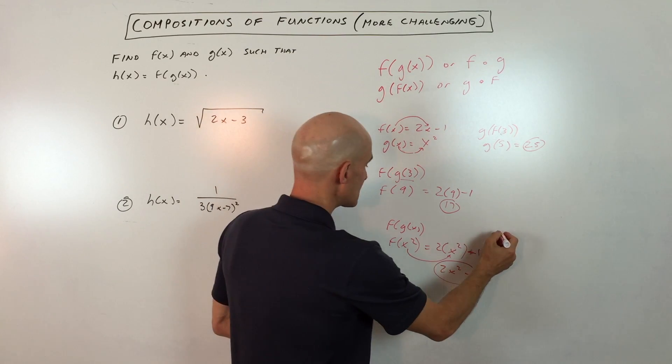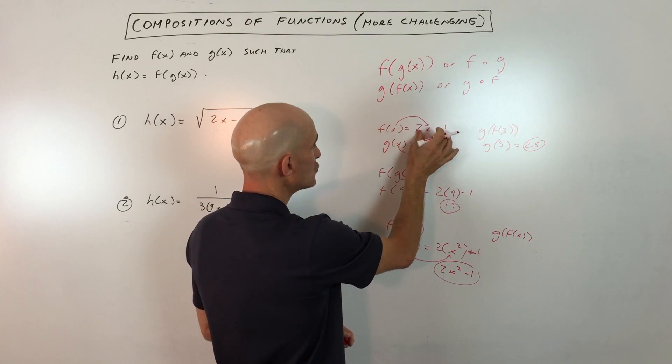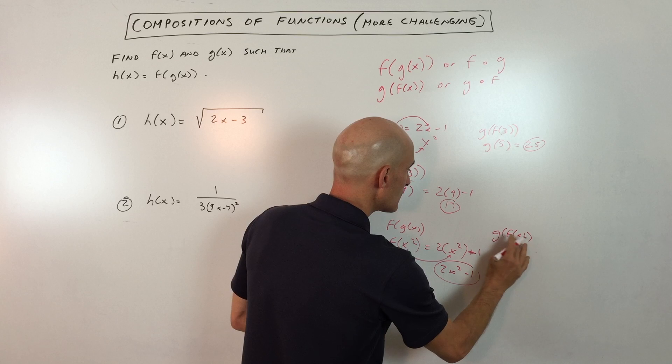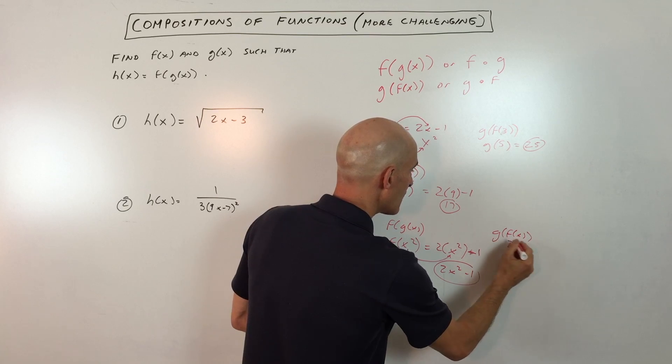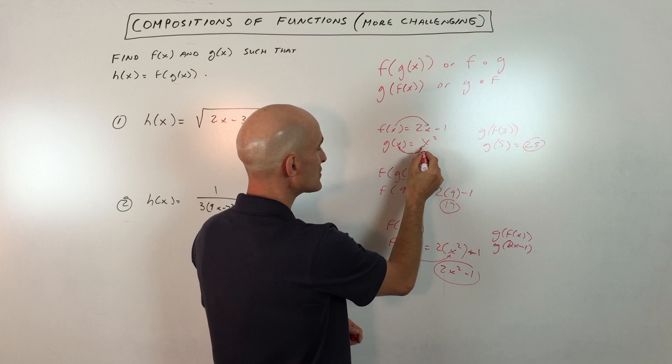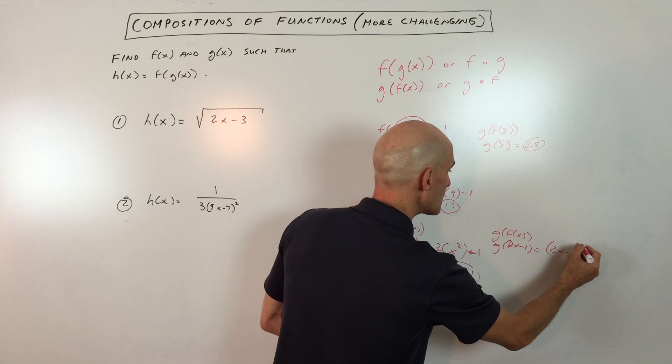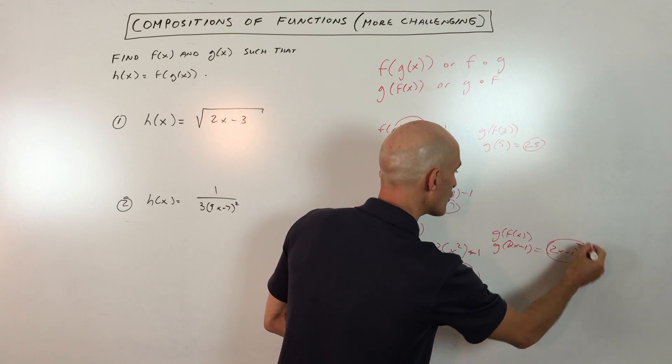If we do it the other way with g(f(x)), we can see that 2x - 1 is our input into our g function. Whatever's here goes in for x on the right, so that's (2x - 1)² and you could FOIL that out or leave it like that.